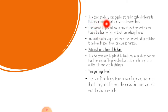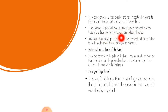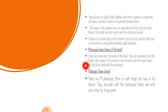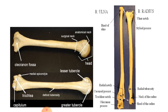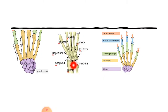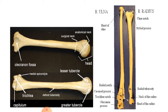The carpal bones are closely fitted together and held in position by ligaments that allow a limited amount of movement between them. The bones of the proximal row are associated with the wrist joint, and those of the distal row form joints with the metacarpal bones. Tendons of muscles in the forearm cross the wrist and are held close to the bones by the strong fibrous bands called the retinaculum.